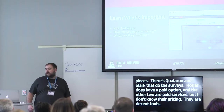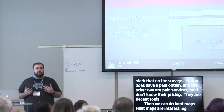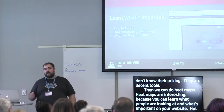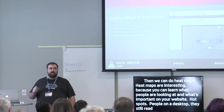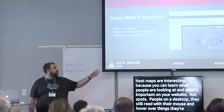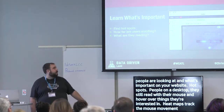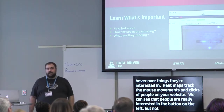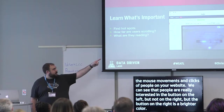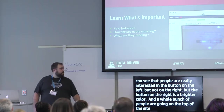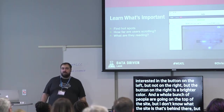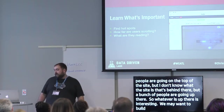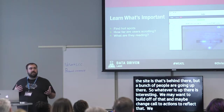Heat maps are really interesting because you can learn what people are looking at and what's important on your website. You can find hotspots — on desktop, people still read with their mouse and hover over things they're interested in. Heat maps track mouse movements and clicks. On one site we could see people were very interested in the button on the left, not the one on the right — even though the right button was a brighter color. We need to see what they're reading and what they're ignoring.